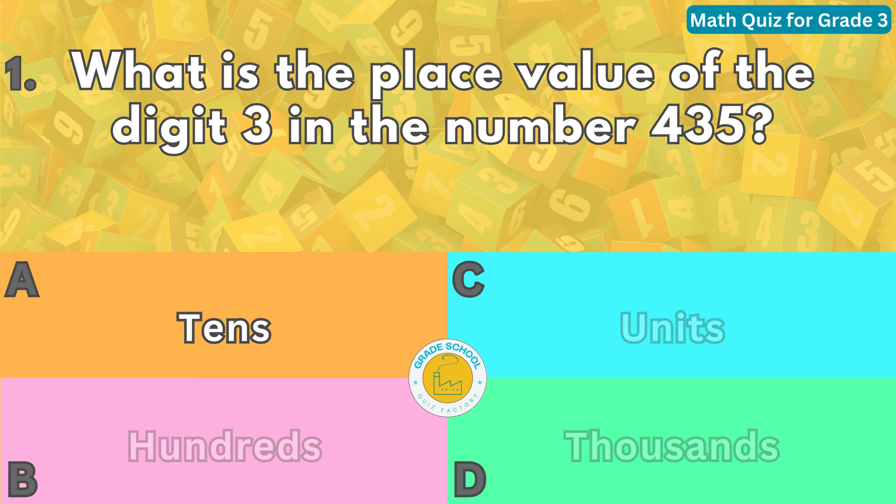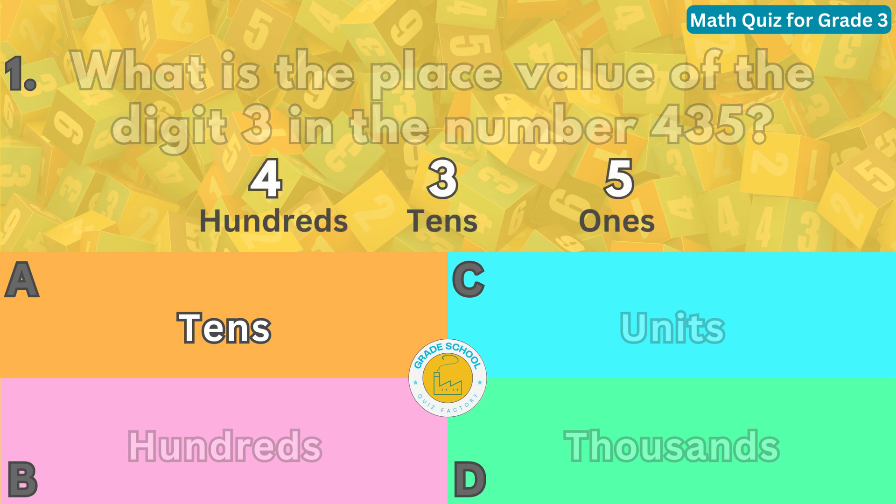A number in the tens place is always 10 times less than the number in the hundreds place. In this case, the hundreds place is 4 and the tens place is 3.